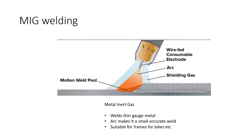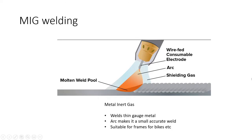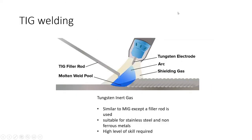TIG welding works in a similar way to MIG, but the key difference is that with MIG the wire is fed through the tube so you can operate it one-handed, whereas with TIG you hold the rod in a separate hand, making it much more difficult. It requires a lot more skill and a much steadier hand, so TIG welders are very skilled. It's used a lot for stainless steel, non-ferrous metals, and aluminium.